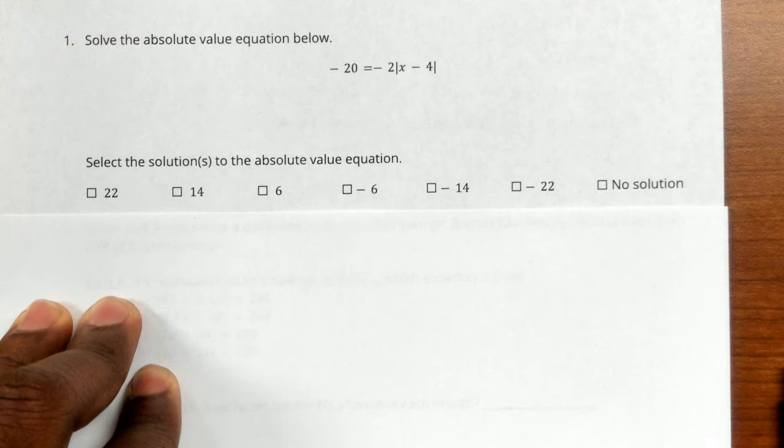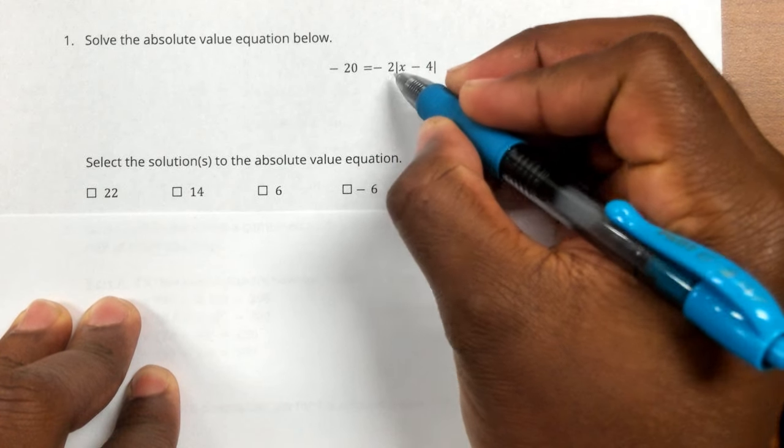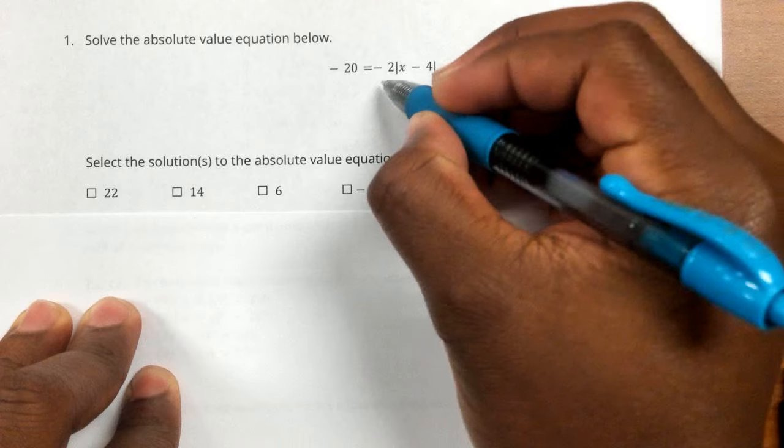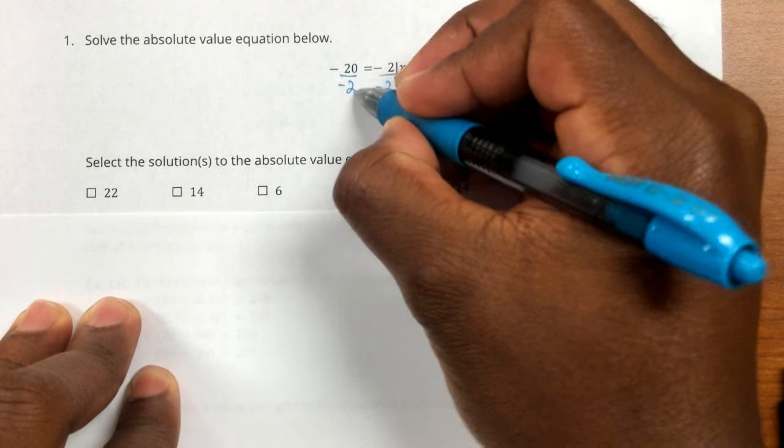So the first thing we're going to do is try to get rid of this negative 2 that's on the outside of the absolute value. So to get rid of multiplying by negative 2, we're going to divide by negative 2 on both sides of our equation.